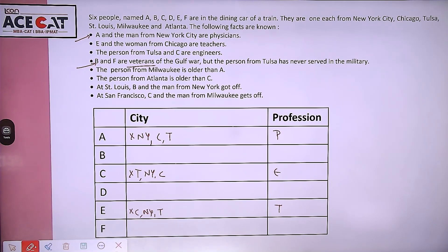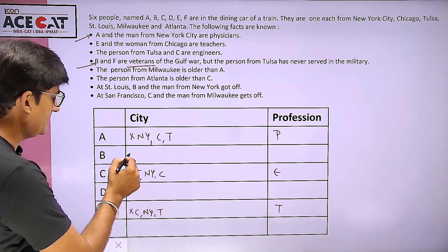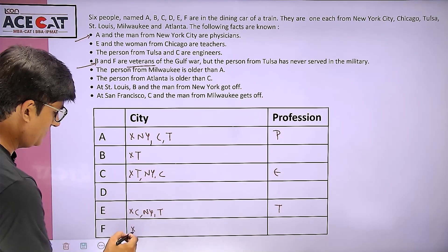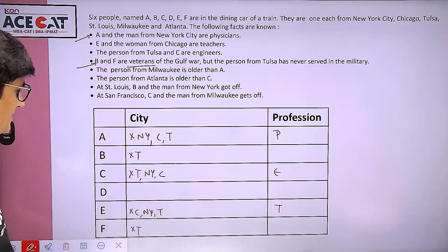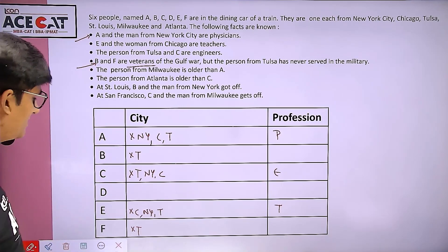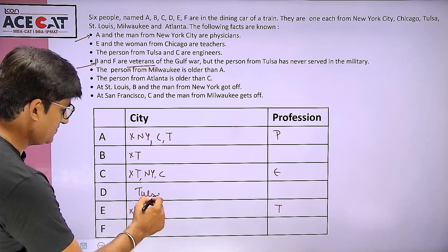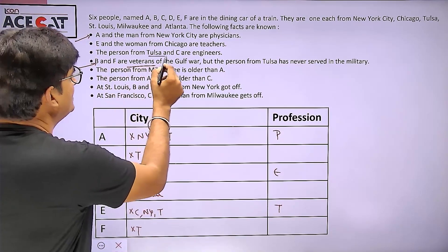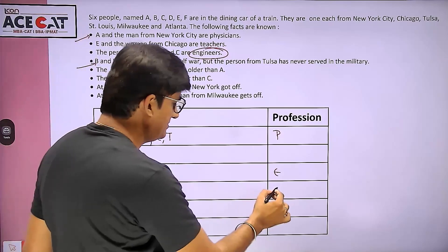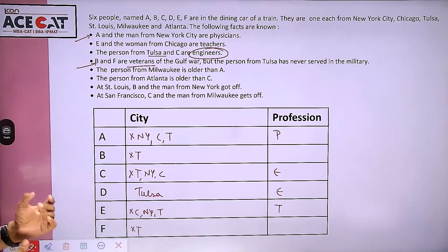Coming to the fourth clue: B and F are veterans of the Gulf War — meaning they served in the military. But the person from Tulsa has never served in the military. That means B cannot be from Tulsa, and F cannot be from Tulsa. Now, for Tulsa, five options have been crossed out — A, B, C, E, and F cannot be from Tulsa. So there is only one option remaining: D belongs to Tulsa. And since the person from Tulsa is an engineer, D also becomes an engineer.